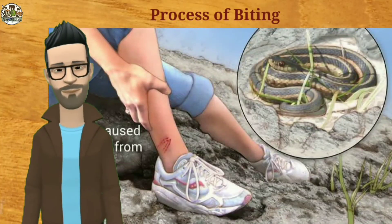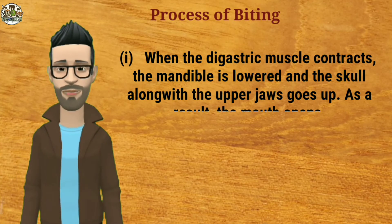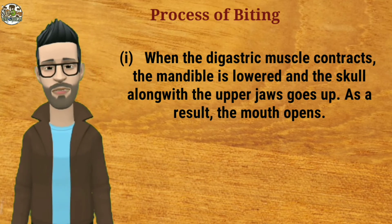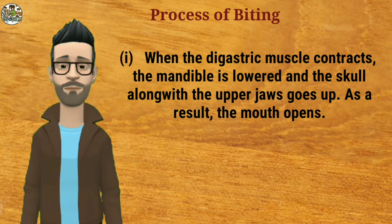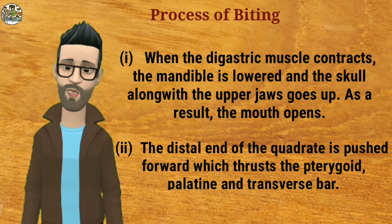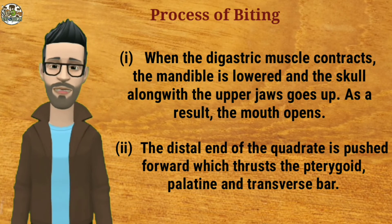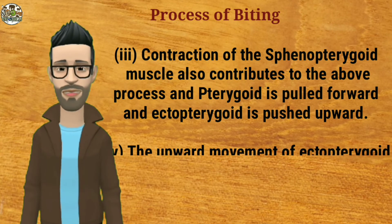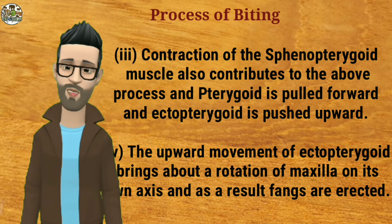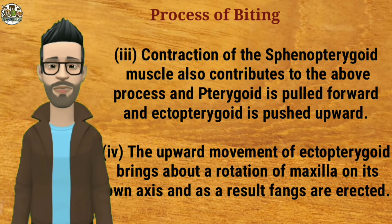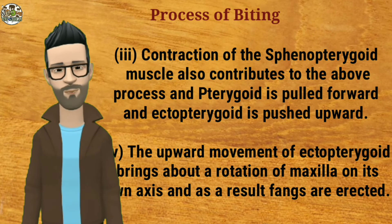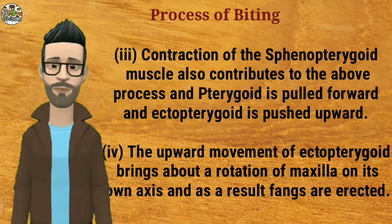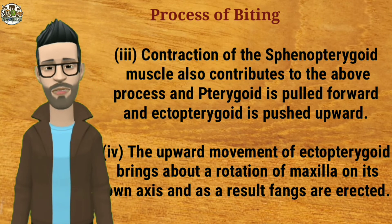Process of biting: when the digastric muscle contracts, the mandible is lowered and the skull, along with the upper jaws, goes up. As a result, the mouth opens. The distal end of the quadrate is pushed forward, which thrusts the pterygoid, palatine, and transverse bar. Contraction of the sphenopterygoid muscle also contributes to this process. The enterygoid is pulled forward and ectopterygoid is pushed upward. The upward movement of the ectopterygoid brings about a rotation of the maxilla on its own axis, and as a result the fangs are erected.